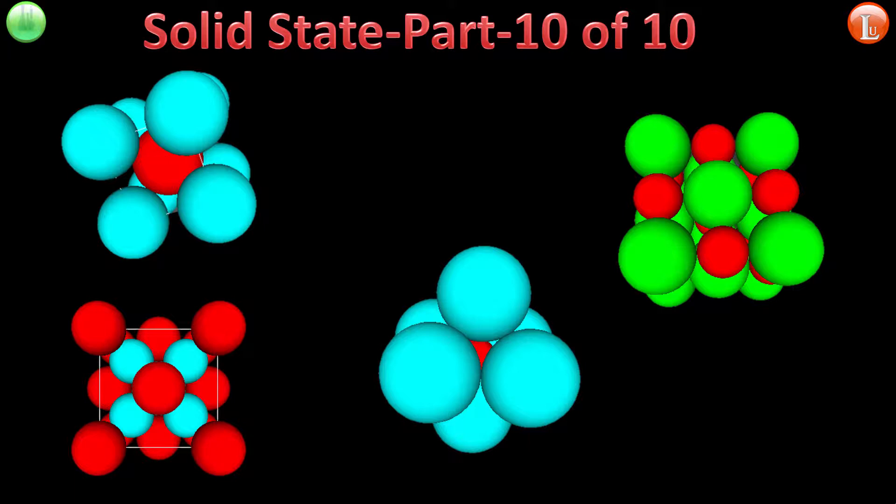We talked about the concept of unit cells, the seven shapes that they exist in, the pattern of arrangement in every given shape, and the cubic unit cell in particular. We talked about the packing fraction of each of those unit cells, the layer arrangement view of various types of unit cells, voids, radius ratios, and right now we are at part 10 of 10, the last part.